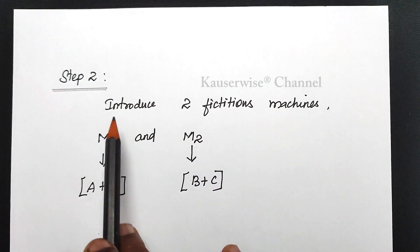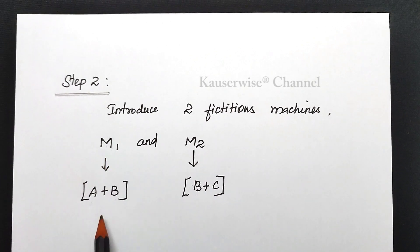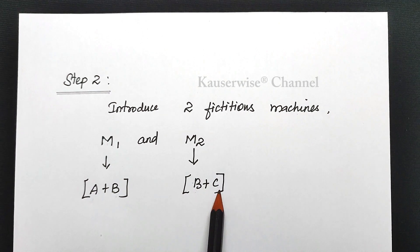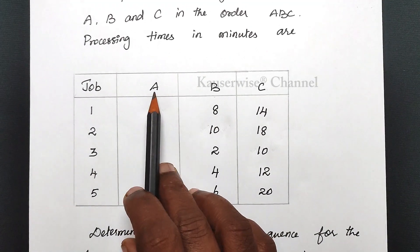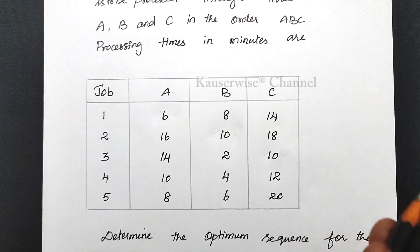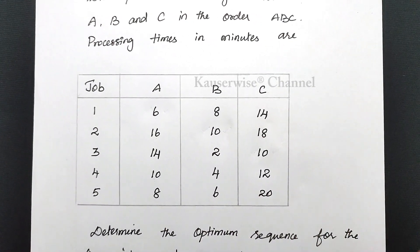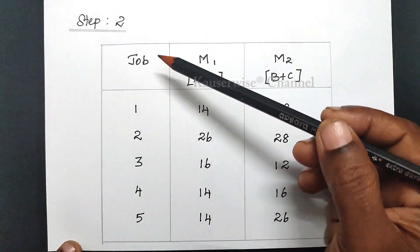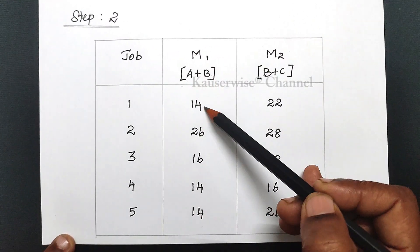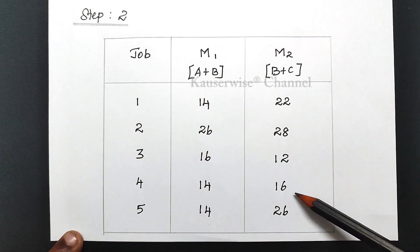Now see the next step. Here we need to introduce two fictitious (imaginary) machines M1 and M2. For M1, we club A's duration and B's duration. For M2, we club B's duration and C's duration. For M1: 6+8=14, 16+10=26, and so on. For M2: 8+14=22, 10+18=28, and so on. In step 2, for 5 jobs: M1 values are 14, 26, 16, 14, 14 and M2 values are 22, 28, 12, 16, 26.